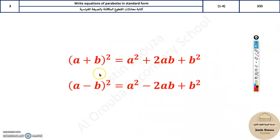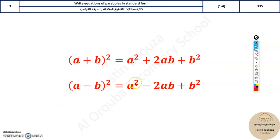We will now solve problems for topic three. There is a shortcut method instead of the longer completing-the-square method, but you must know the algebraic identities: (a + b)² equals a² plus 2ab plus b², and (a − b)² equals a² minus 2ab plus b².